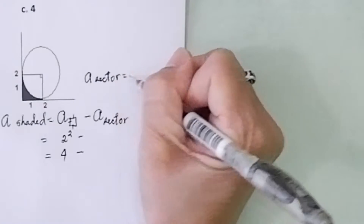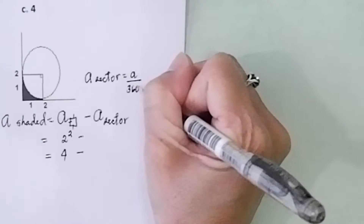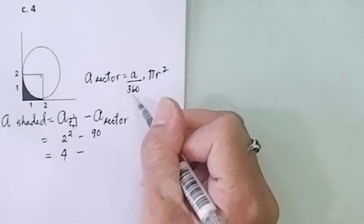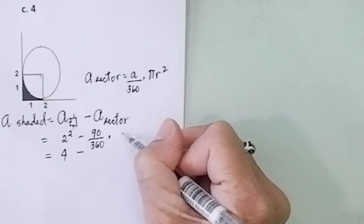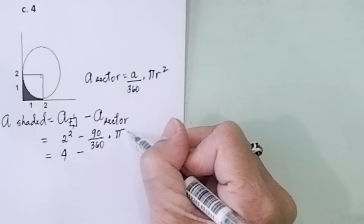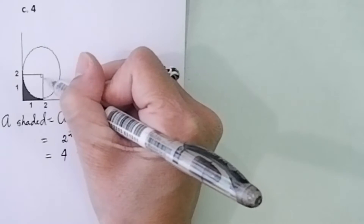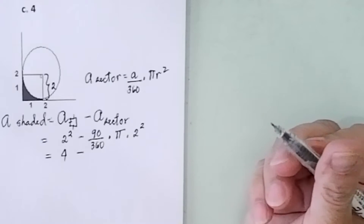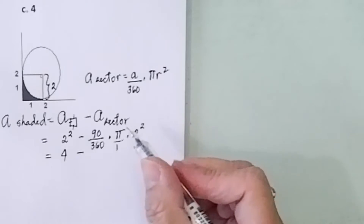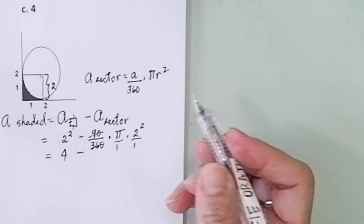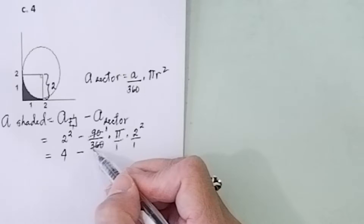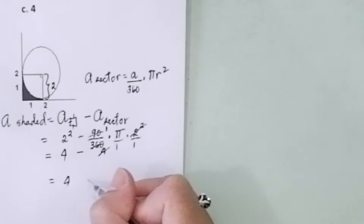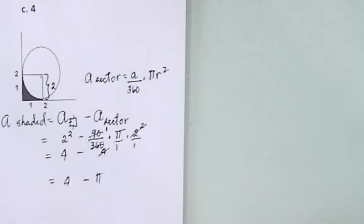The area of a sector is: (angle / 360) times pi R squared. Here, the angle is 90 degrees and R is 2. So the area of the sector is (90/360) times pi times 2 squared, which is (90/360) times 4pi. 90 divided by 90 is 1, and 360 divided by 90 is 4; this 4 cancels with 2 squared which is 4. So the area of the shaded part is 4 minus pi. The answer is letter B.